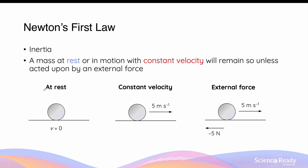At first glance, this statement can be very confusing, so let's break this down. A mass at rest means it has no velocity. Newton's first law states that if this object is at rest, it will remain at rest and not move until it is acted upon by an external force.